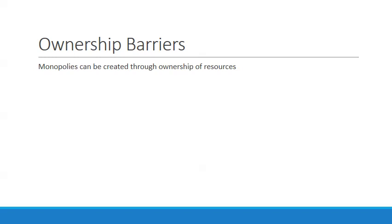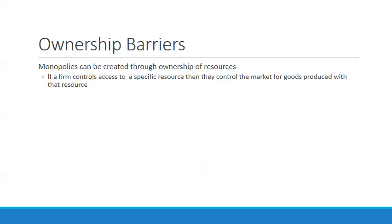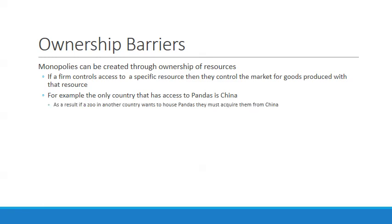The second barrier to entry is the ownership barrier. Monopolies can be created through the ownership of resources — if a firm controls access to a specific resource, they control the market for goods produced with that resource. For example, the only country with access to pandas is China. If a zoo in another country wants to house pandas, they must acquire them from China, which charges around $250,000 for access.